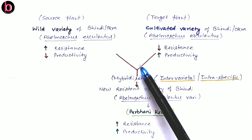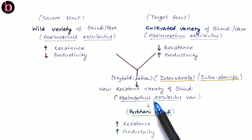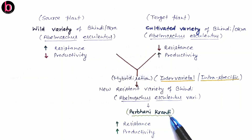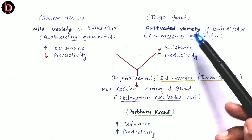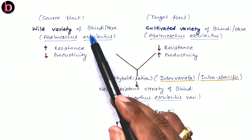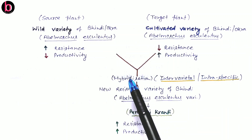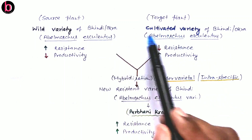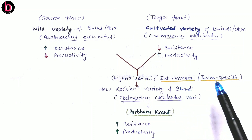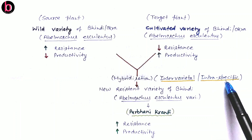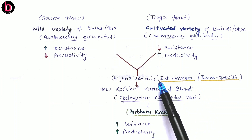By hybridization, we produce a new resistant variety of bhindi — Abelmoschus esculentus variety Parbhani Kranti — which carries high disease resistance like the wild variety and high productivity like the cultivated variety. We have successfully combined the characteristics of both in a single plant. This hybridization occurs between the same species but two different varieties, so it is intraspecific — same species — and intervarietal — two different varieties. This is a very good example of intervarietal or intraspecific hybridization.